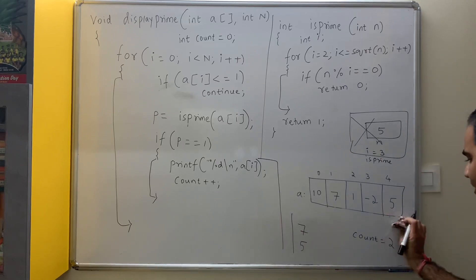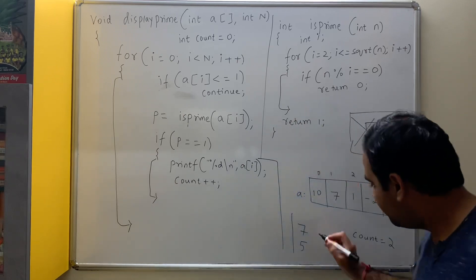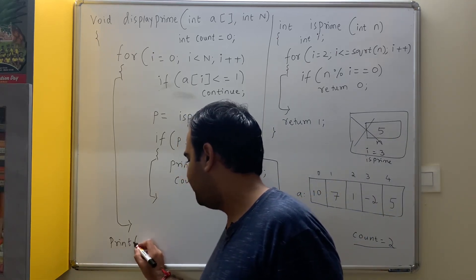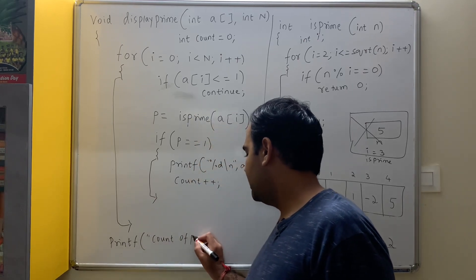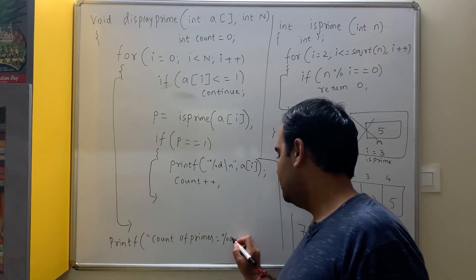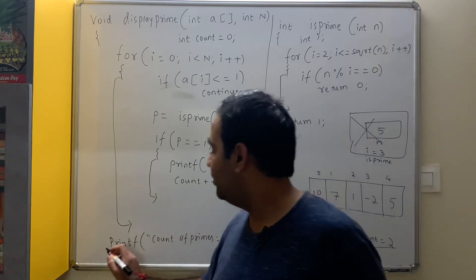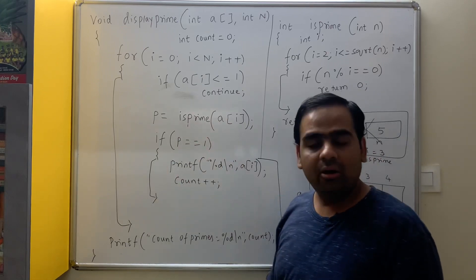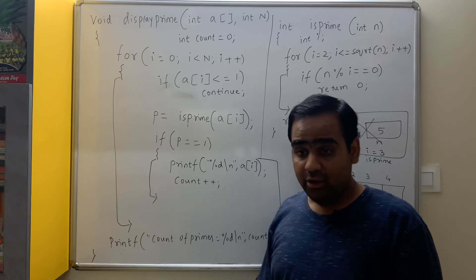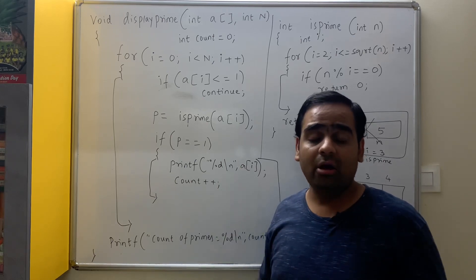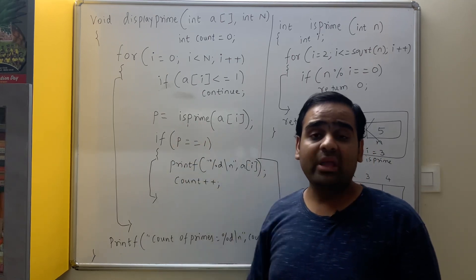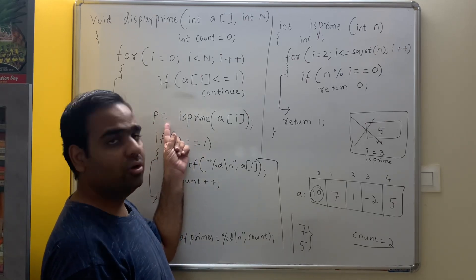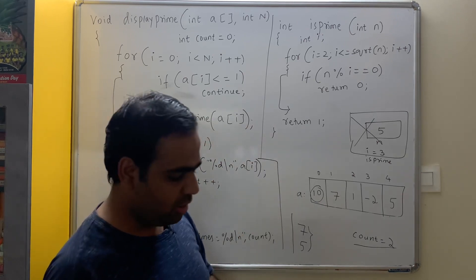i++ makes i equal to 5, and 5 < 5 is false, so we exit the loop. We have displayed all prime numbers. Now we write printf to display the count of primes, stored in the variable count. Then we close the display_prime function. Similarly, you can find all palindrome numbers in an array using is_palindrome(a[i]), Armstrong numbers using is_Armstrong(a[i]), or count set bits of each element using p = set_bits(a[i]) and printing p.